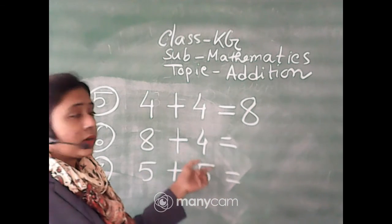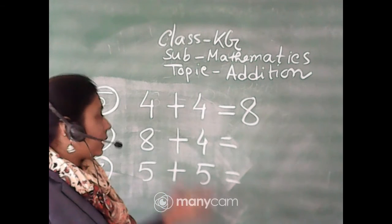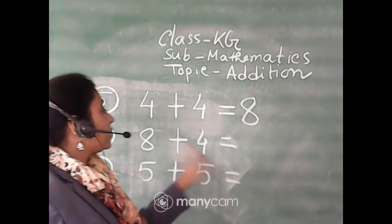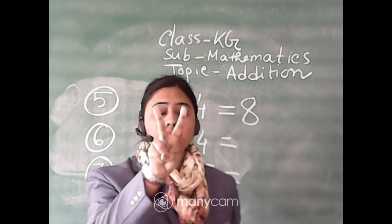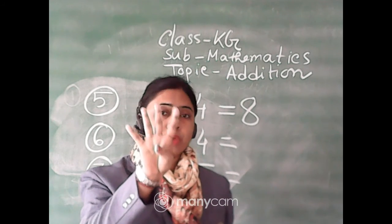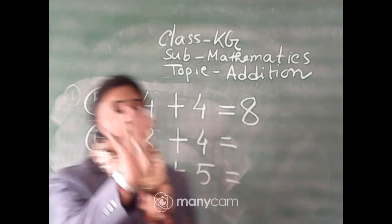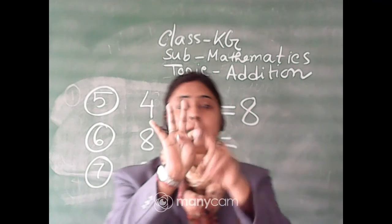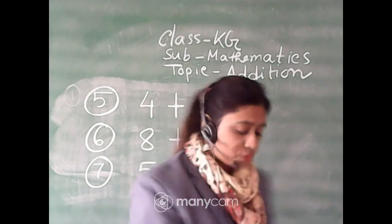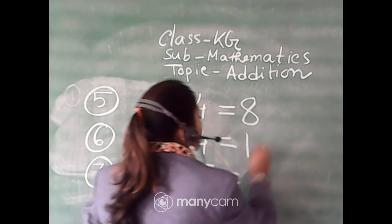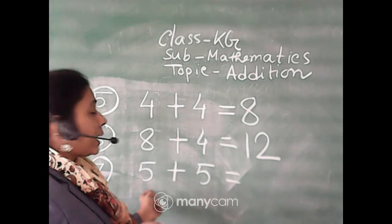Then eight plus four. Here we find the big and small numbers — four is the small number, so one, two, three, four fingers. The other number is eight, so counting on from four: nine, ten, eleven, twelve. So eight plus four is equal to twelve.